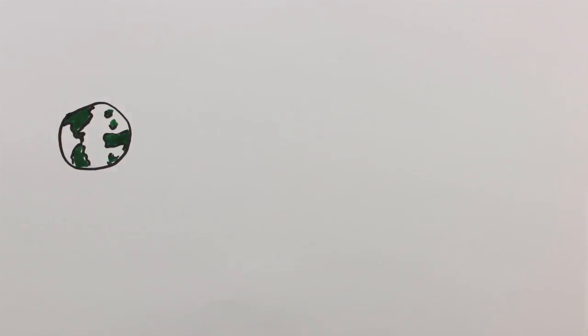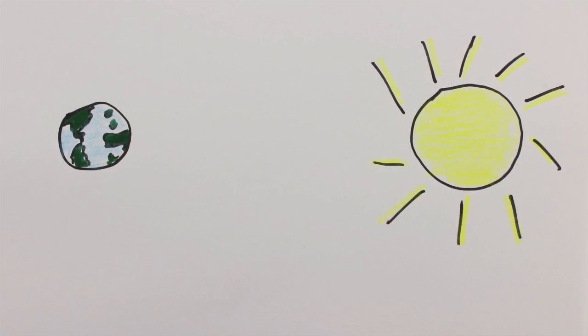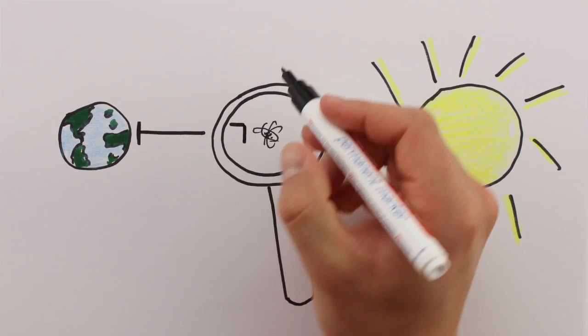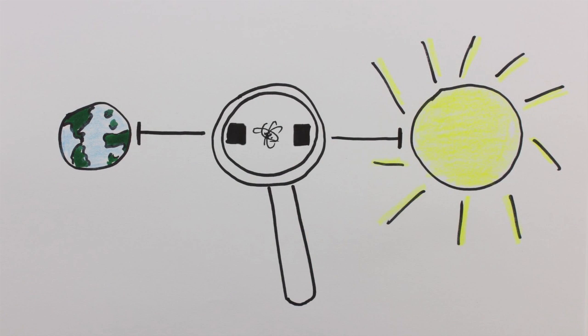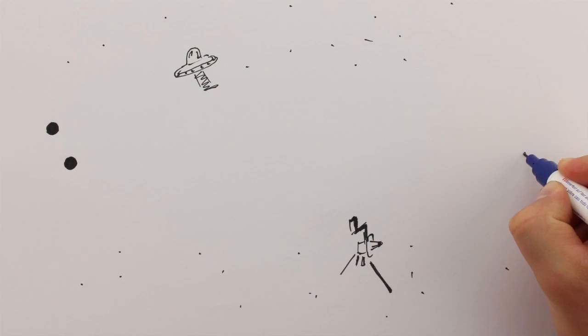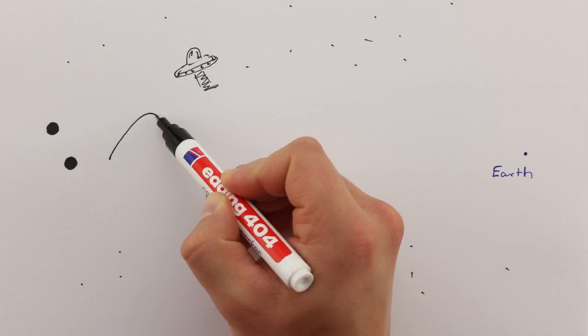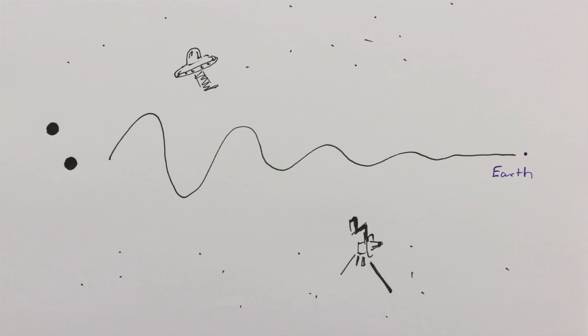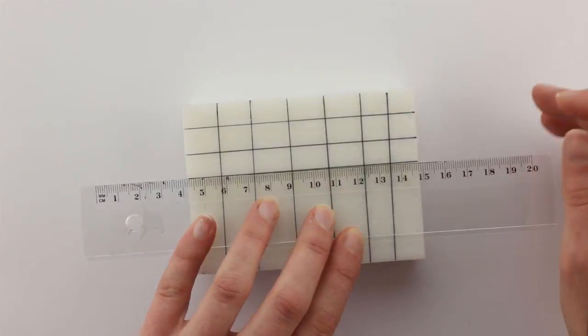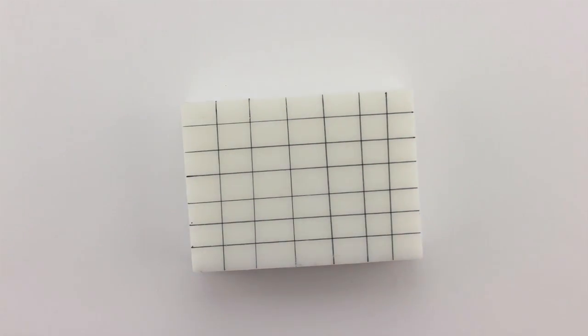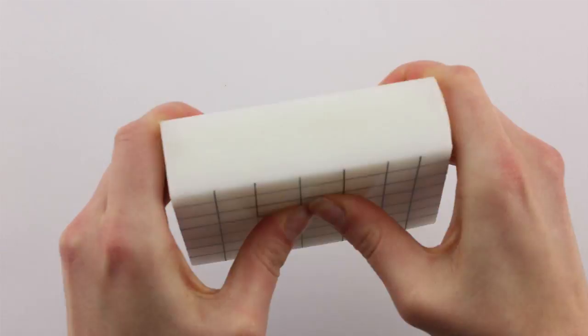But for almost all gravitational waves, this effect is really small. Imagine the radius of a hydrogen atom when you're looking at the distance between the Earth and the Sun. This is because astronomical objects are really far away, and the gravitational waves need to travel for a long time before they reach us. At the same time, the fabric of spacetime is incredibly stiff, making it difficult to make strong gravitational waves in the first place.